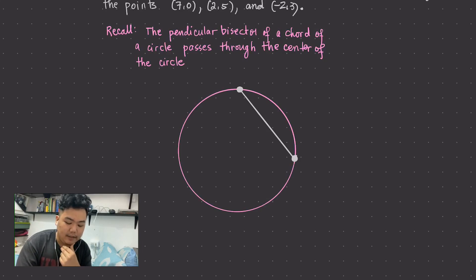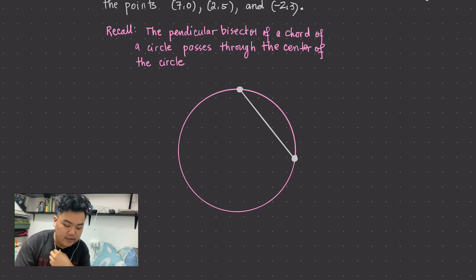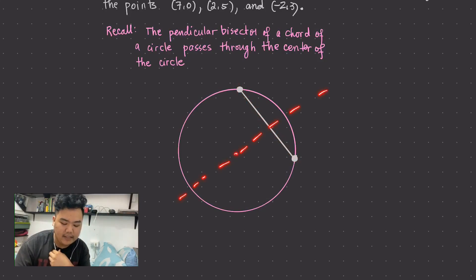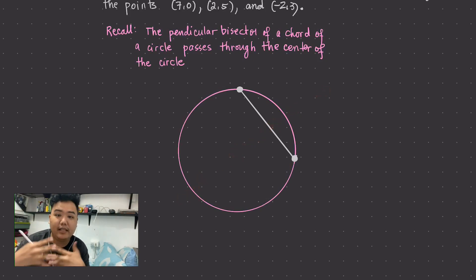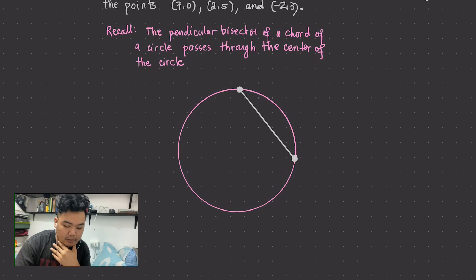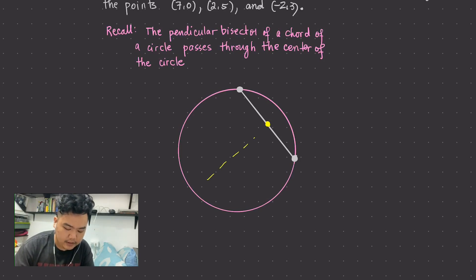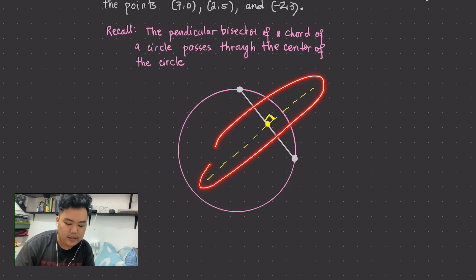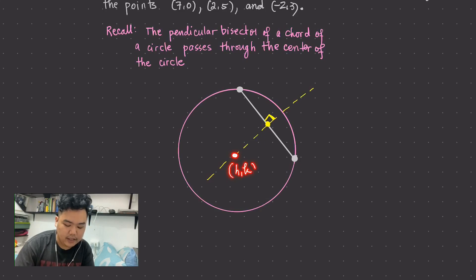It says here that the perpendicular bisector of a chord of a circle passes through the center of the circle. The perpendicular bisector is a line perpendicular to your line segment that passes through the midpoint of the line segment. So if this is your chord, you get the midpoint and let a perpendicular line pass through that midpoint. This perpendicular bisector passes through the center of the circle, which we call (h, k).